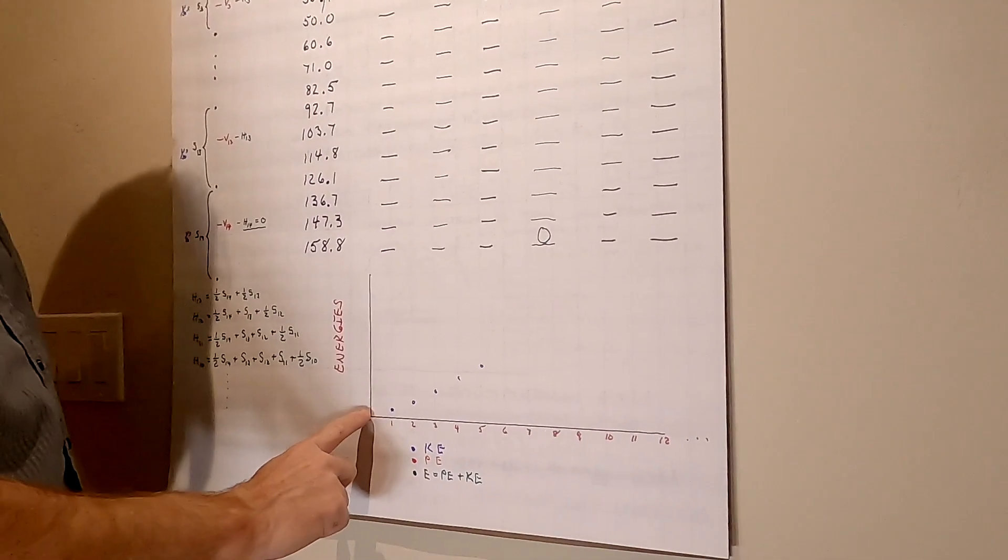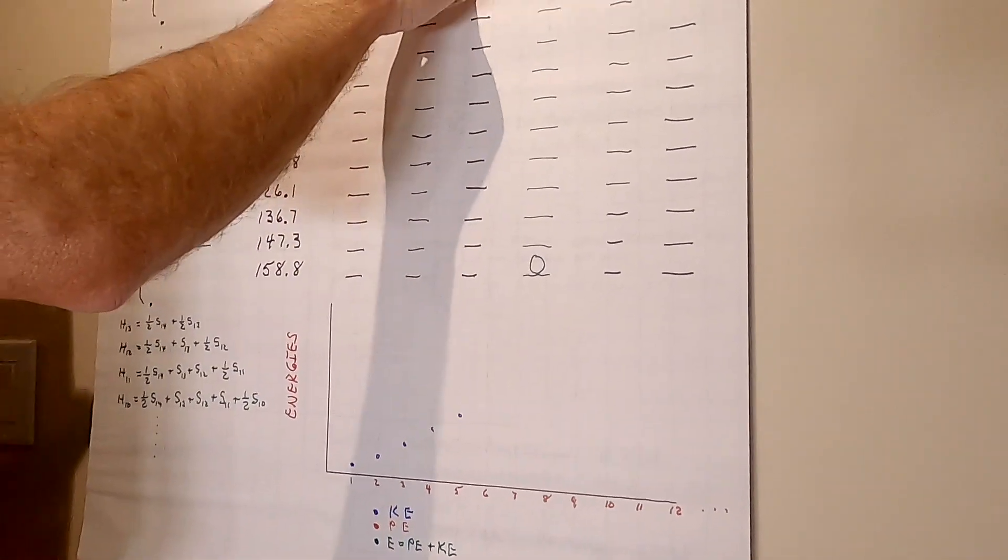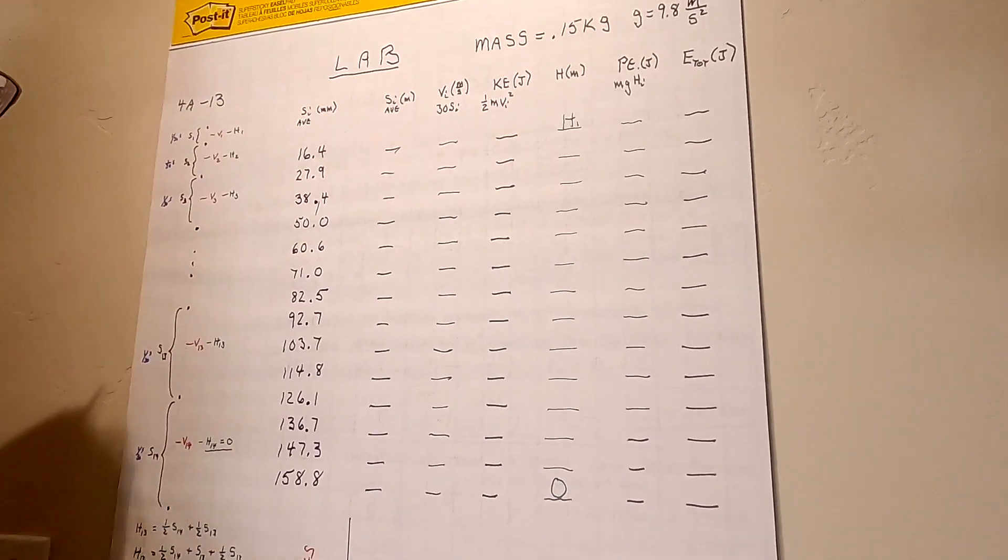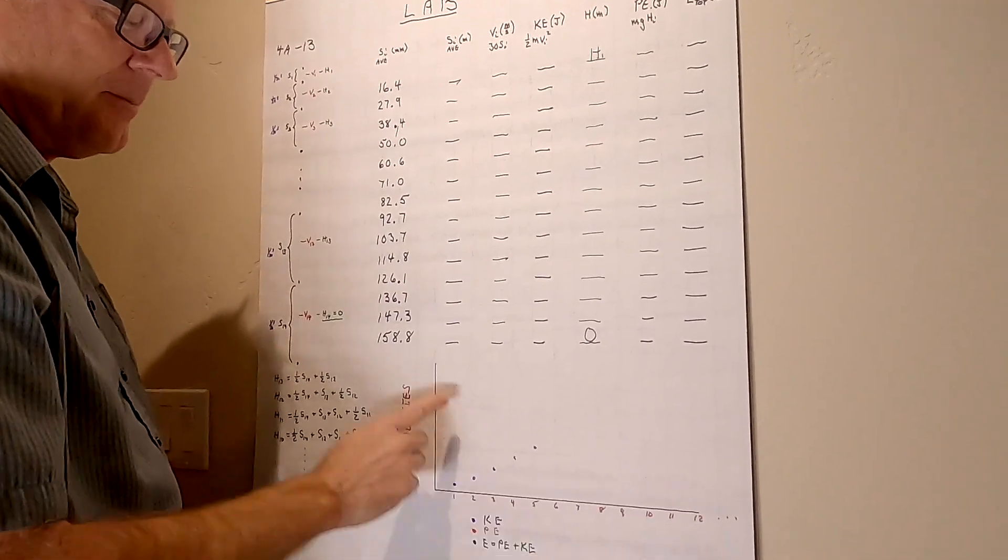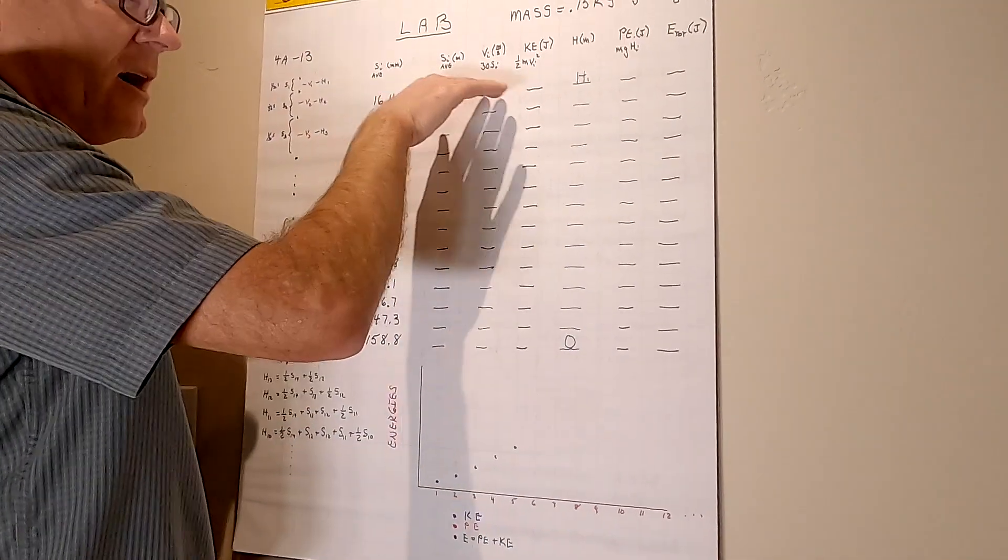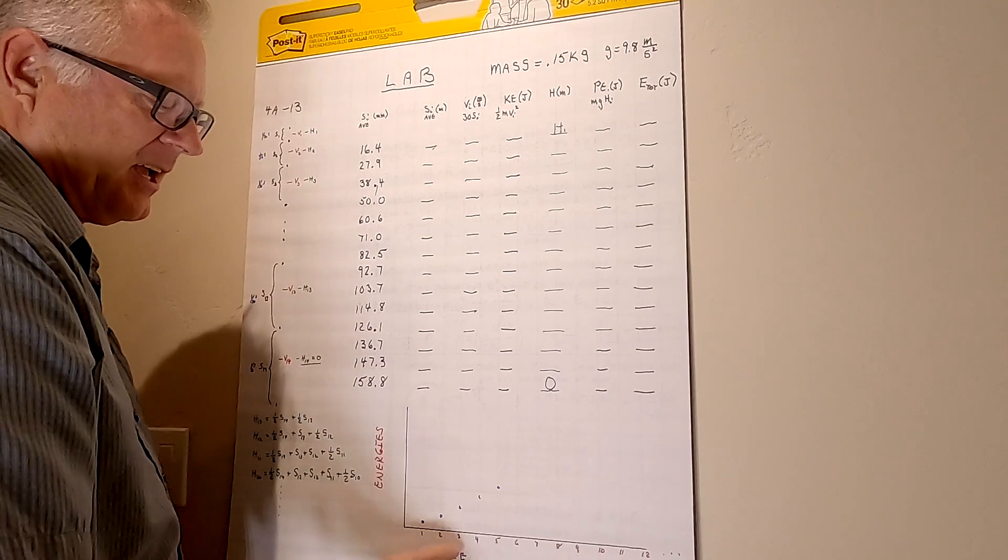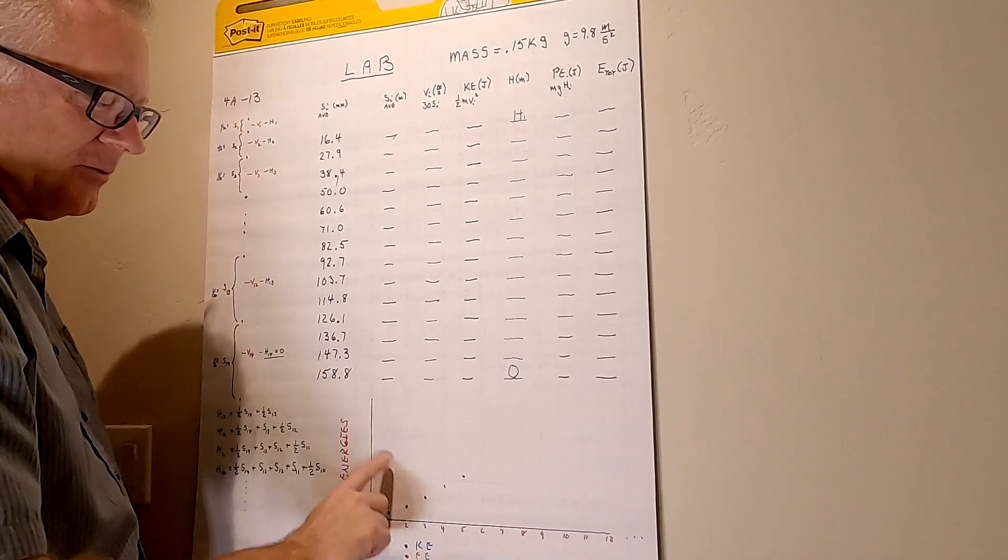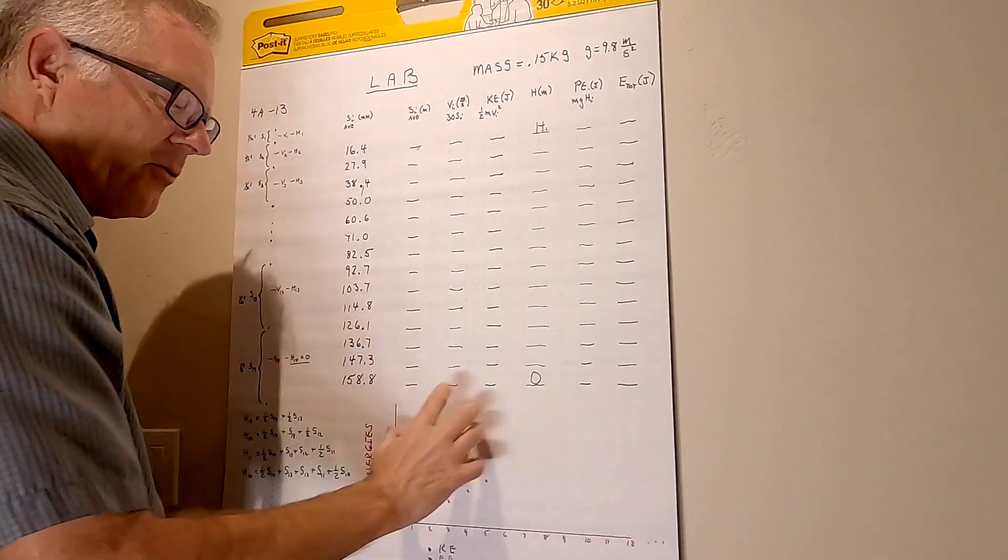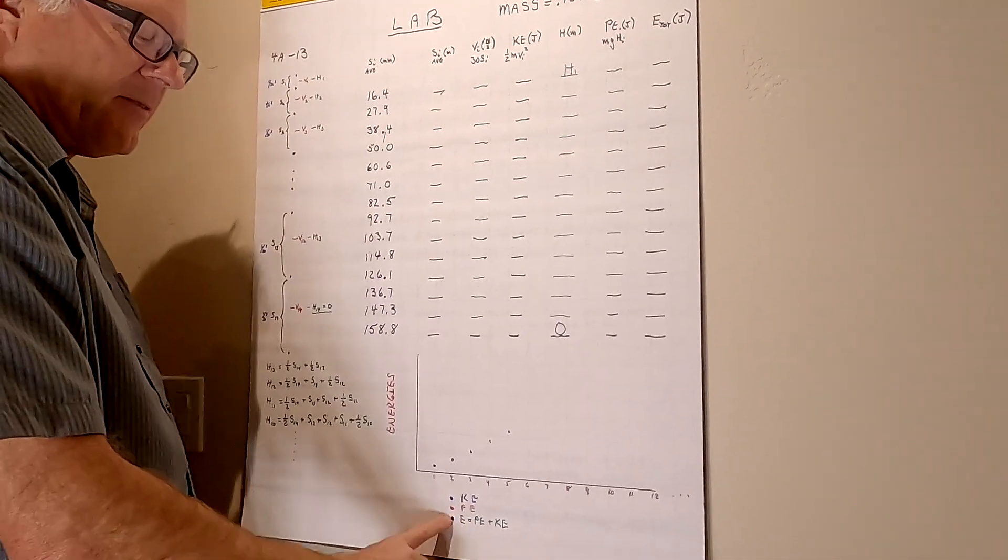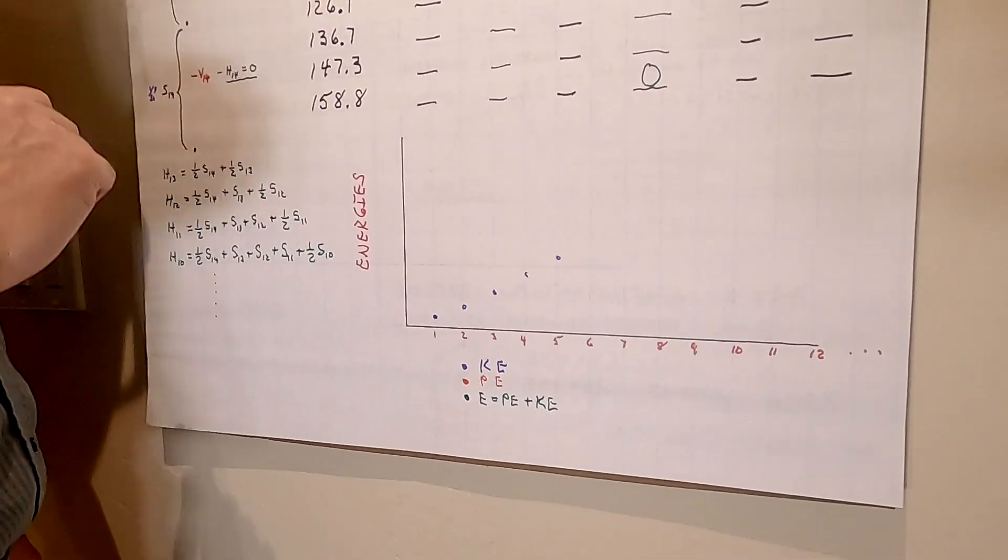Except one of them is going to be the points for kinetic energy, which is probably going to grow as you're coming down. One for the potential energy, which is going to drop when you go down. And one which is the sum of those two. So you're going to have three different plots all on one graph.